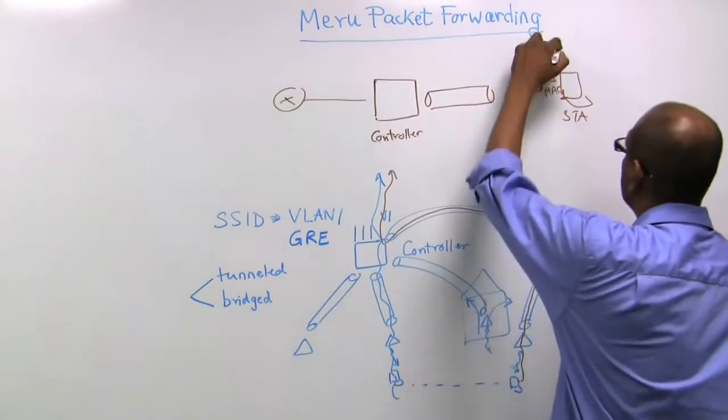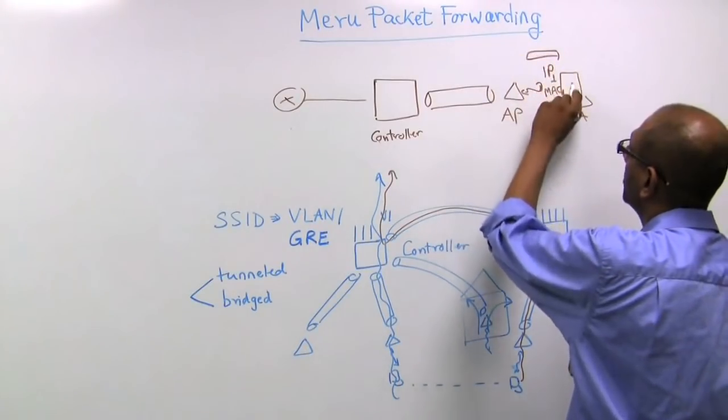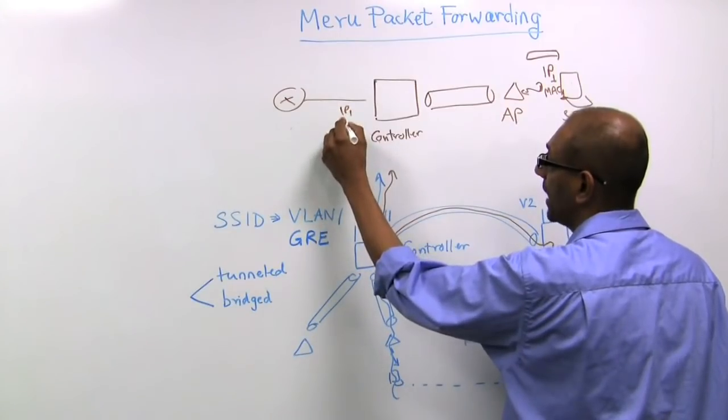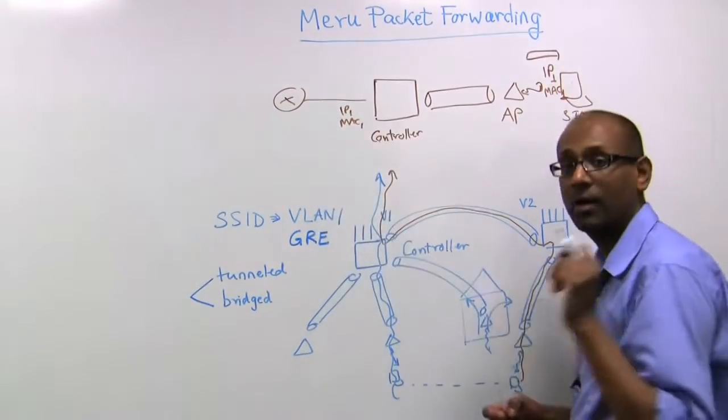So when the packets, let's say a particular packet, from a station goes out of the controller, it actually retains the source IP as well as the source MAC of that station.